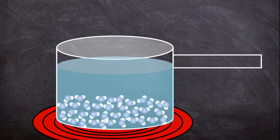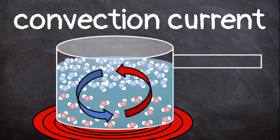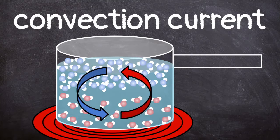This creates a current called a convection current. The water in the pot moves around in a circle as it is heated.